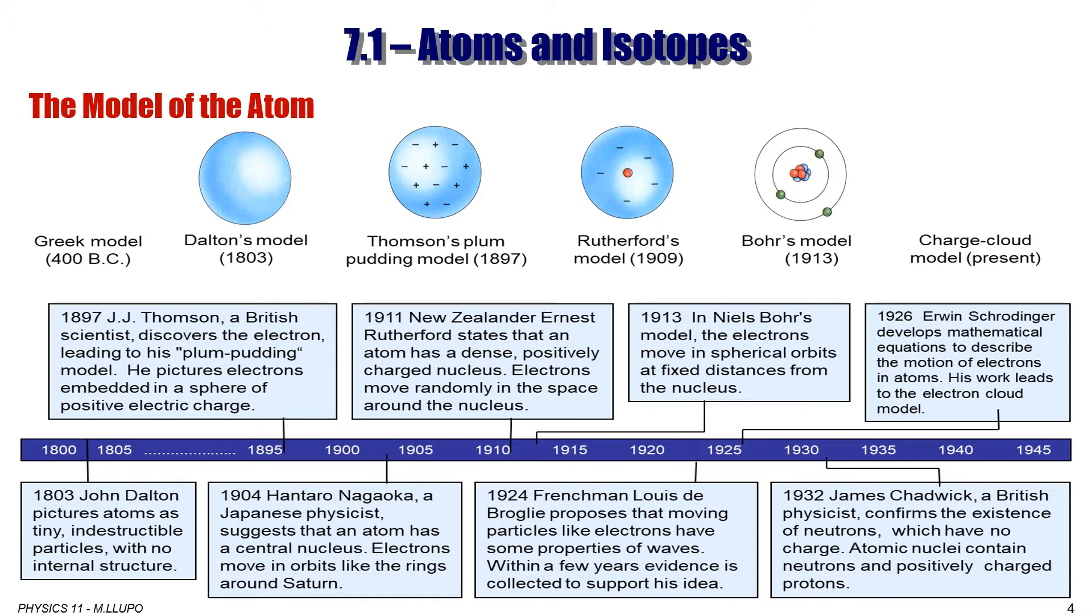Then another phase change for explaining the atom is a charge-cloud model. In 1926, Erwin Schrödinger developed a mathematical equation to describe the motion of electrons in atoms. In 1932, James Chadwick, a British physicist, confirmed the existence of neutrons, which have no charge. Atomic nuclei contain neutrons and positively charged protons.